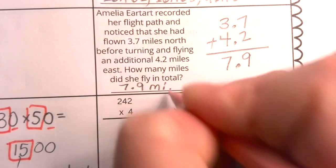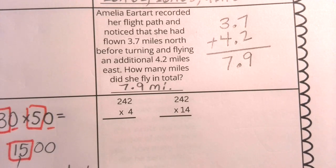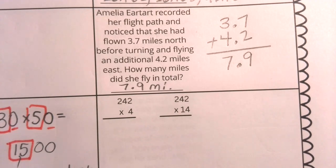So I am going to say that she flew seven and nine tenths miles. I can abbreviate miles with an M and an I. That is how far she flew.